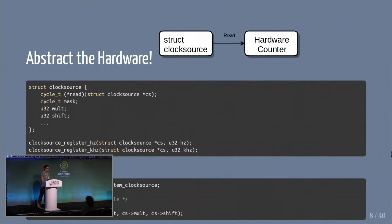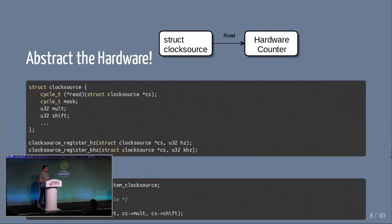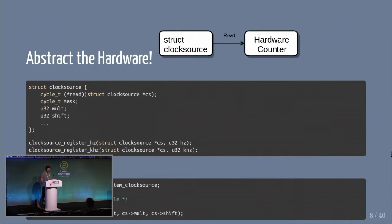Wrapping this all together, we need to abstract the hardware. We have this struct clock_source that has a function called read that lets you read the hardware counter, and then it stores the mult-shift values and other things. The functions used to register them are clock_source_register_hz and clocks_calc_mult_shift, which do the mult-shift calculations internally and assign them to the mult-shift values in the structure. You can see an example of how we calculate time differences.